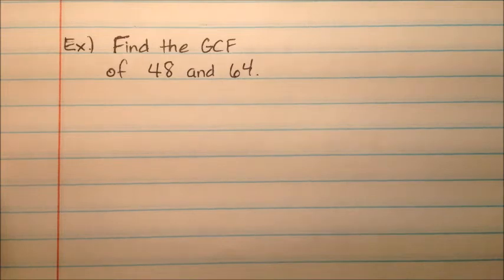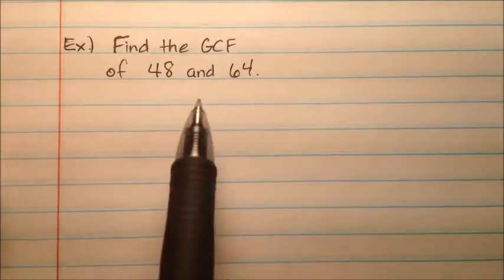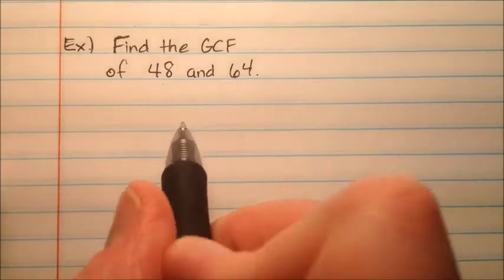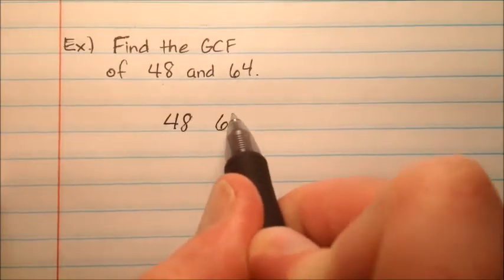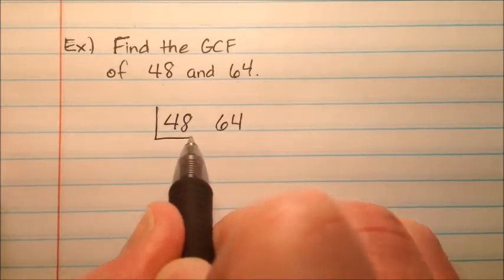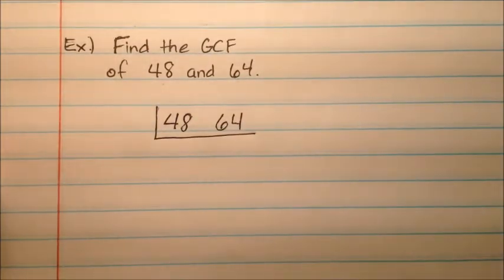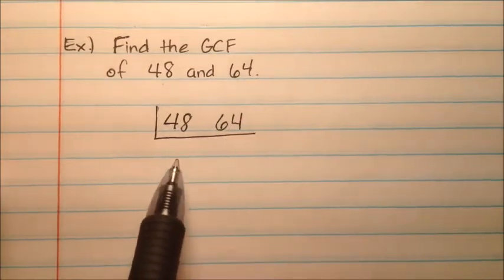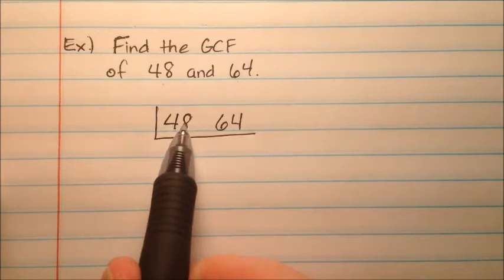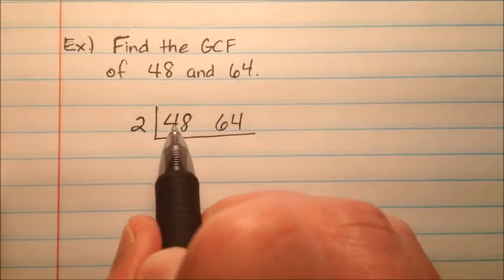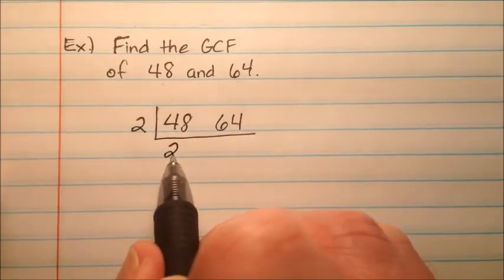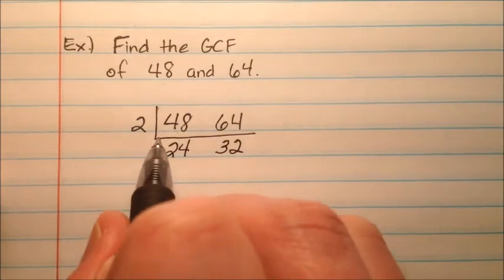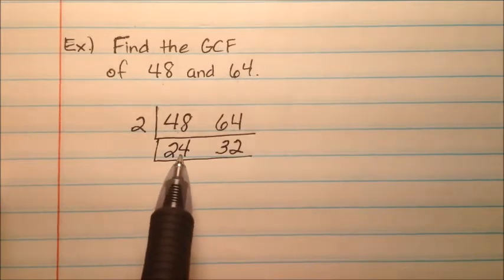In the next example, I'm going to find the GCF, or the greatest common factor, of 48 and 64. I'll put 48 and 64 right next to each other and think: is there a number that divides both of these evenly? Again, they're both even, so I can take a 2 out. 48 divided by 2 is 24, and 64 divided by 2 is 32.